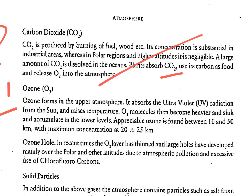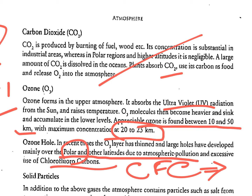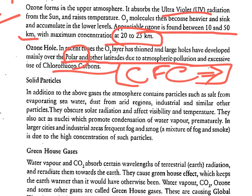Ozone forms in the upper atmosphere, absorbs UV radiation from the sun, and raises temperature. Appreciable ozone is found between 10 to 15 km, with maximum concentration at 20 to 25 km. In recent times, the ozone layer has thinned and large holes have developed, mainly over the polar regions, due to atmospheric pollution and excessive use of CFCs (chlorofluorocarbons) from refrigerators and air conditioners.